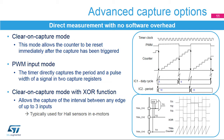This slide presents more advanced capture-related functions. The clear-on-capture mode causes a counter reset immediately after the capture has been triggered, allowing a direct measurement of the period. In PWM input mode, the timer is able to capture both the period and the duty cycle of an incoming PWM signal. The input signal is internally routed to two capture channels: the rising edge is captured on input capture 2 to provide the period value with clear-on-capture mode, while the falling edge is captured by capture 1, providing the pulse length duration. The duty cycle corresponds to the ratio between input capture 1 and input capture 2.